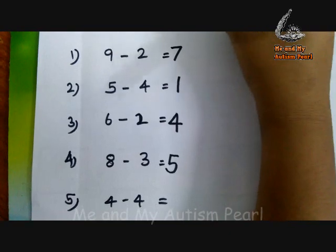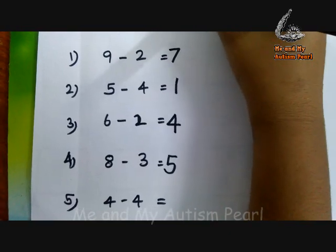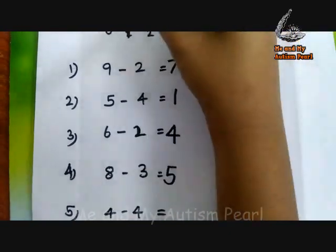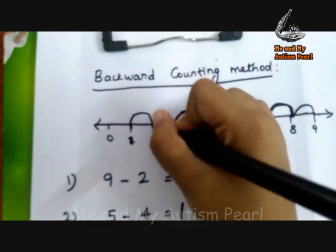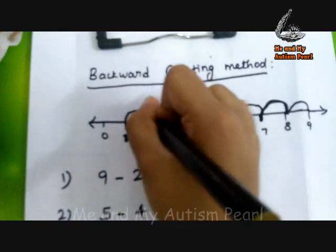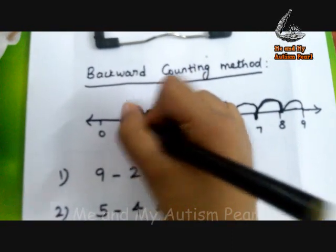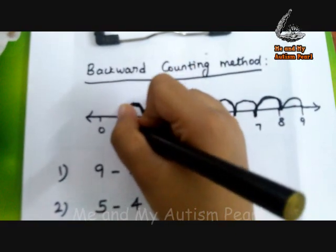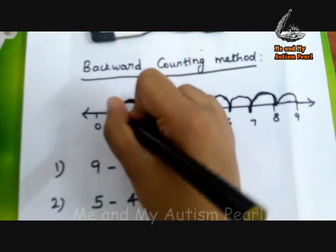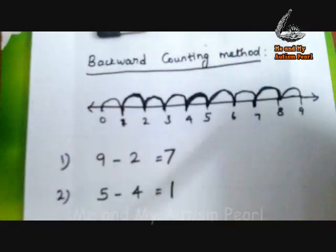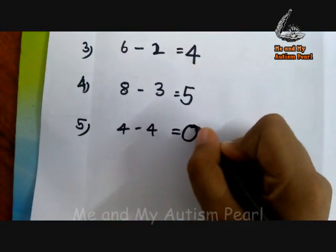Four minus four. Start from four: four minus one is equal to three, four minus two is equal to two, four minus three is equal to one, four minus four is equal to zero. Write it then. Very good.